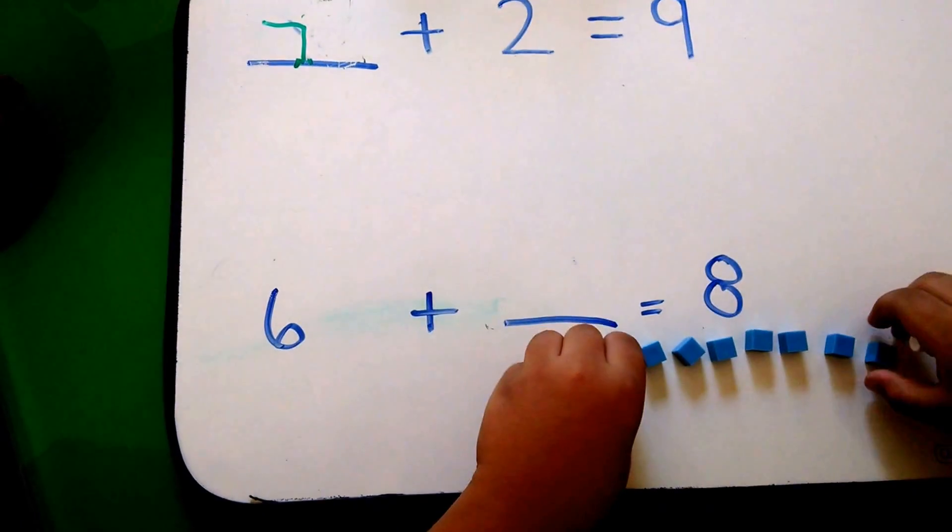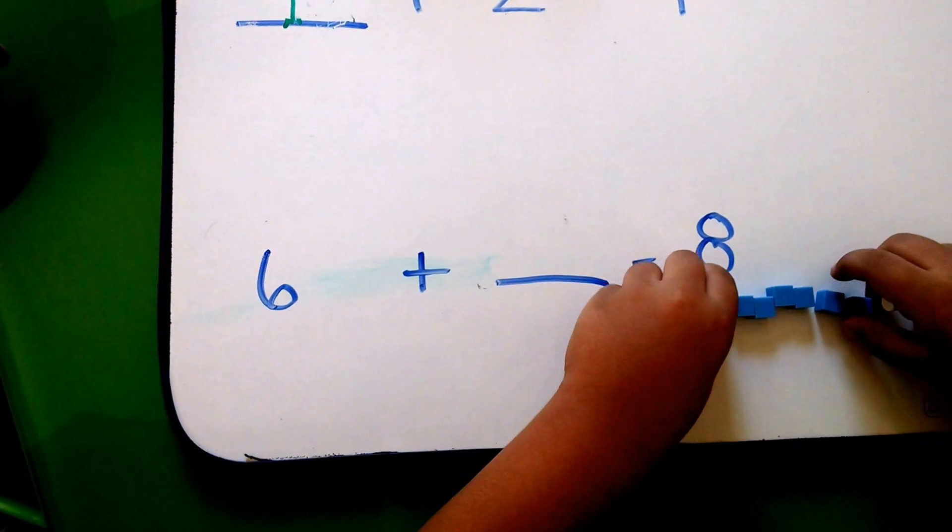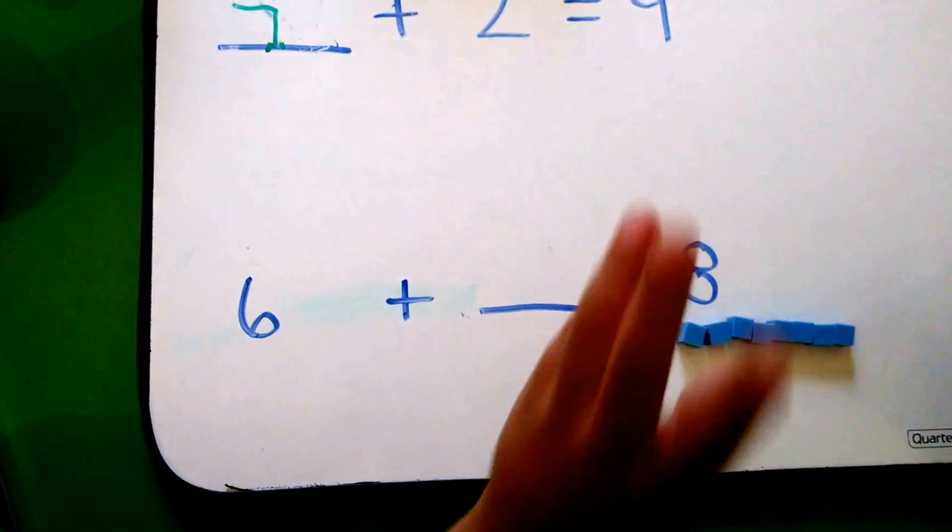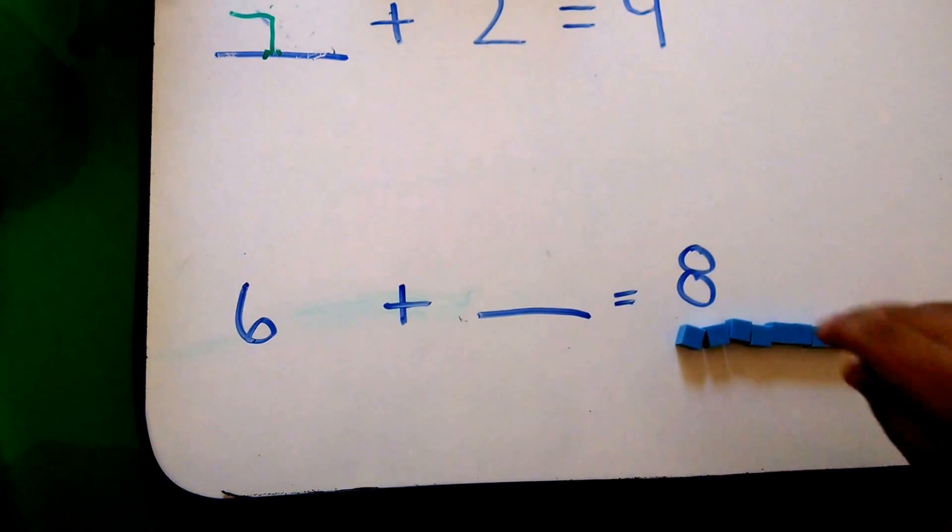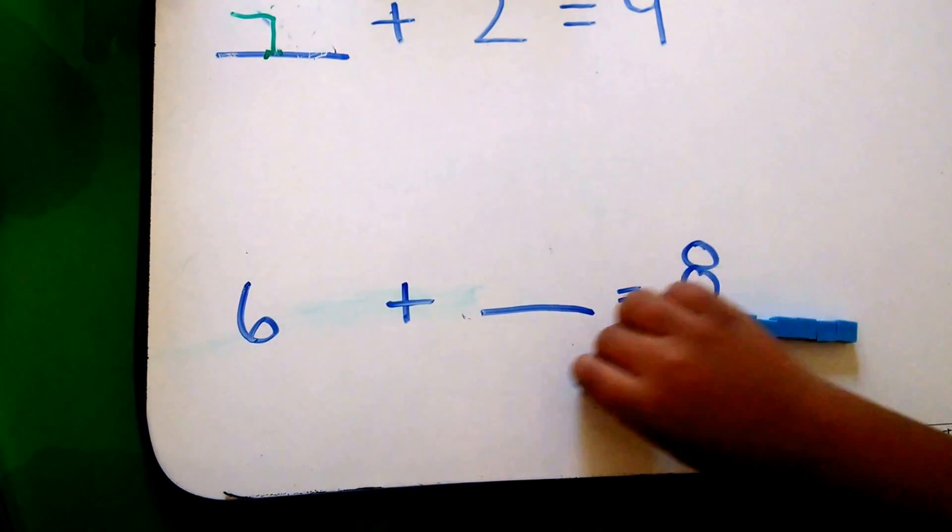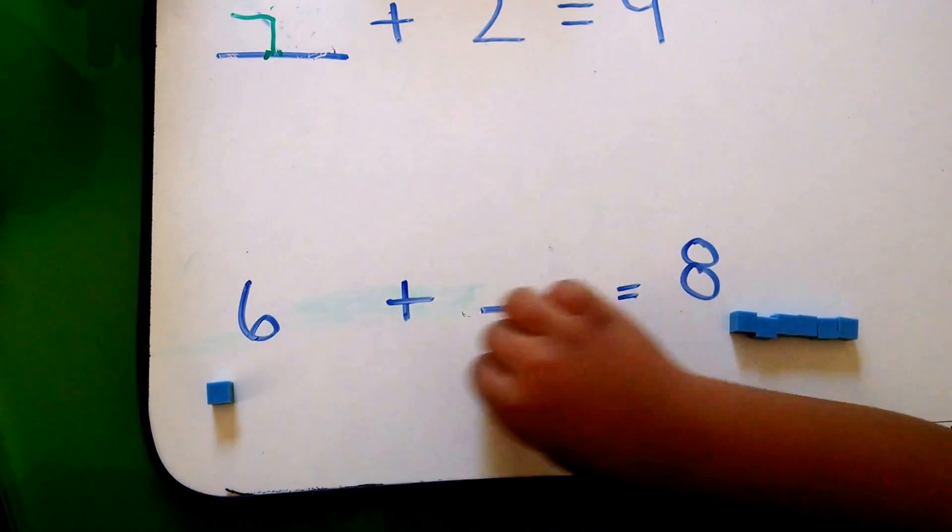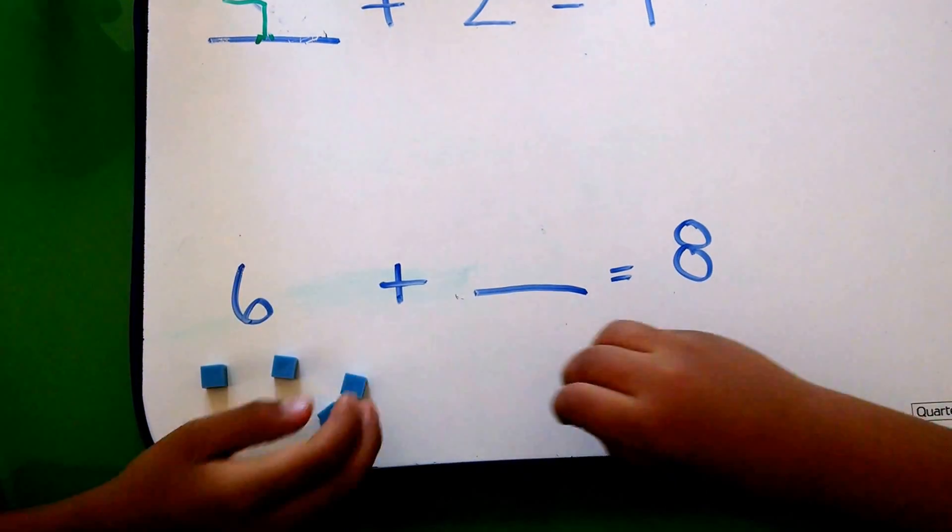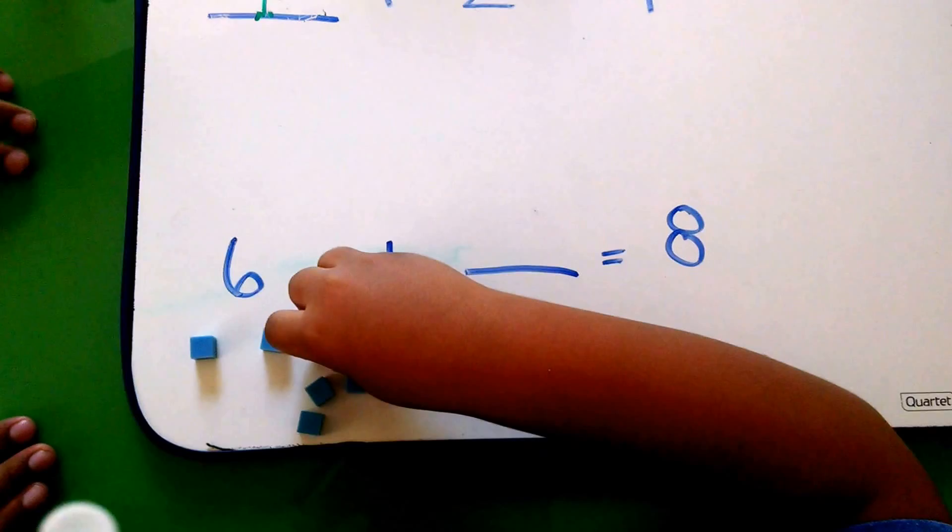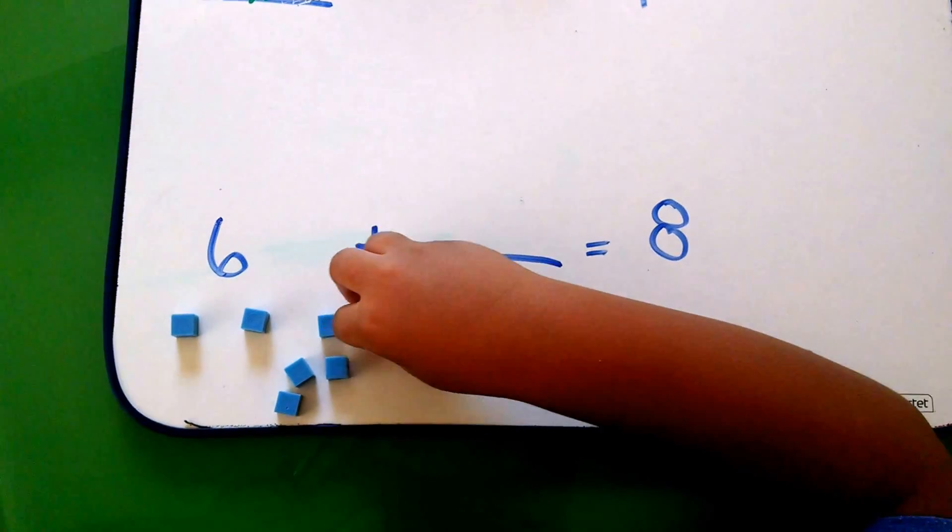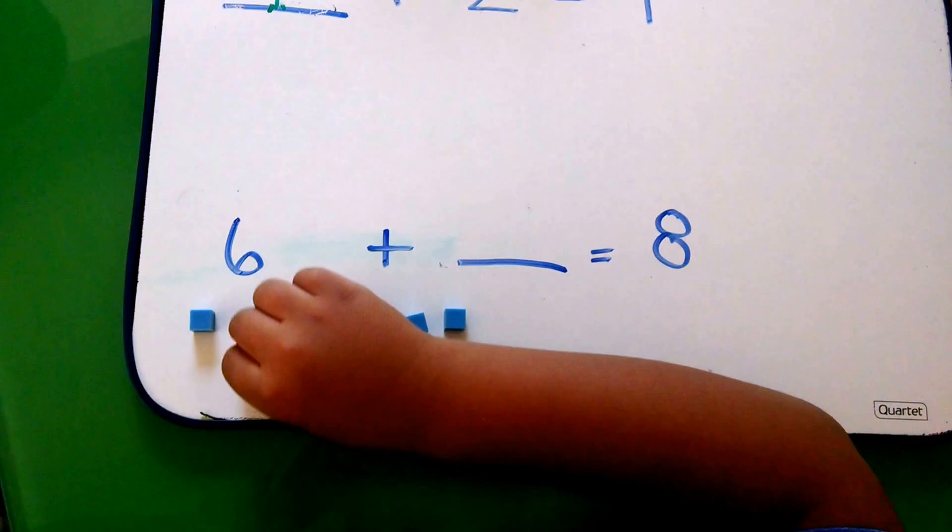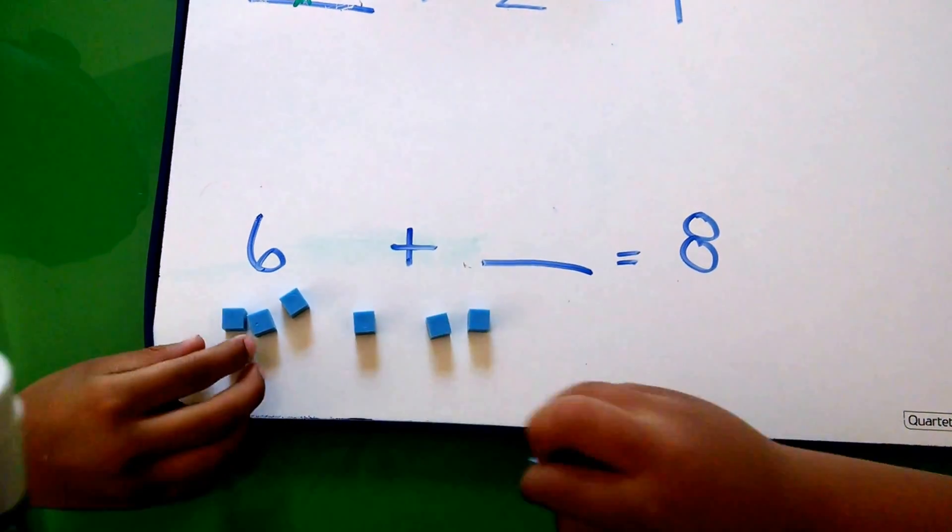Now you. Take away six blocks. One, two, three, five, six. So it's six blocks.